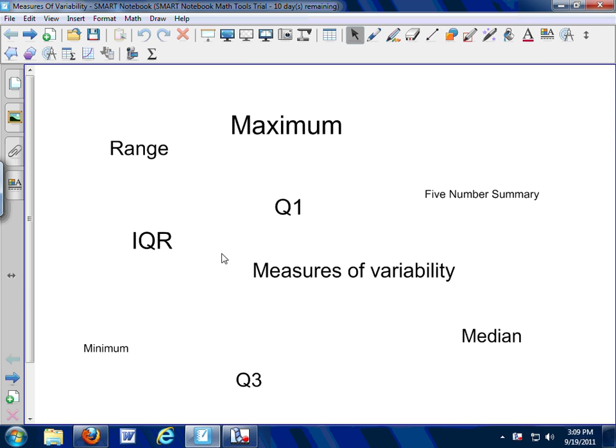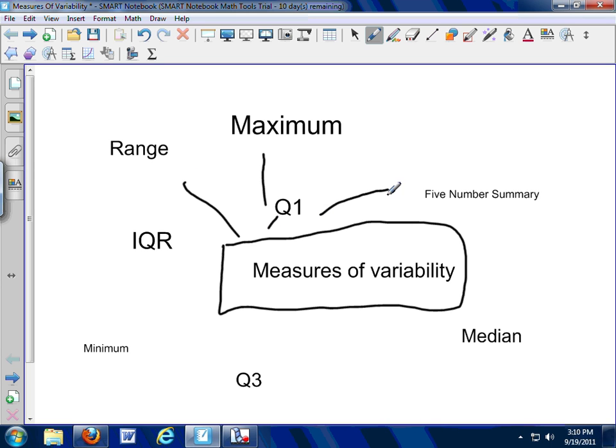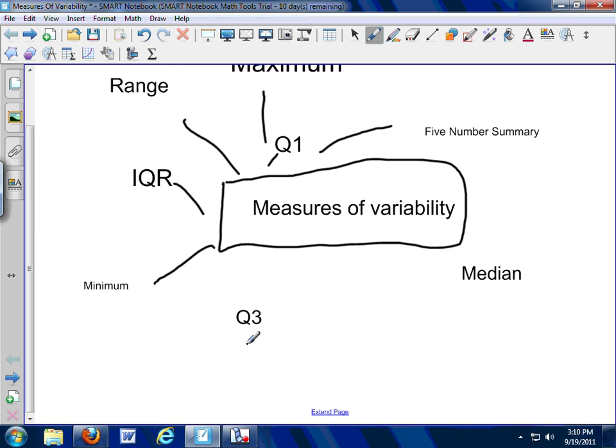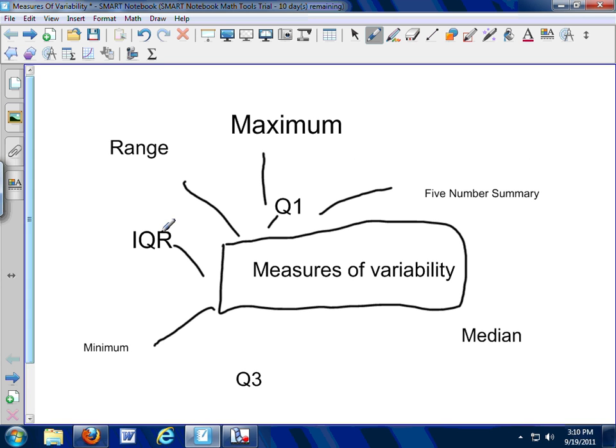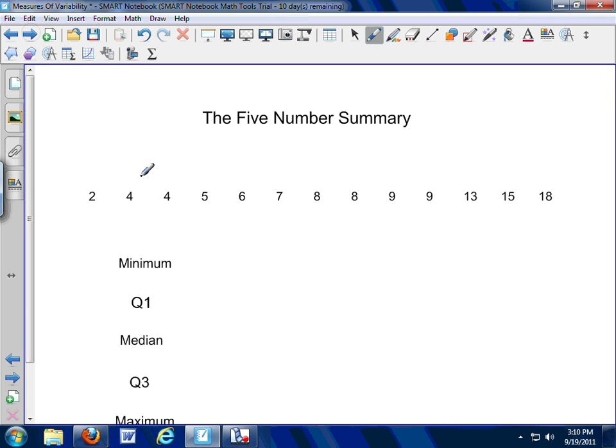Here we go with another math video. The topic is measures of variability, and these words all swirling around are words associated with measures of variability. So far, we've been talking about measures of center. Measures of center give us an indication of how all our things are alike. Measures of variability give us an indication of how our things are different. Basically, they're just giving us some information about how the various things are different from one another.